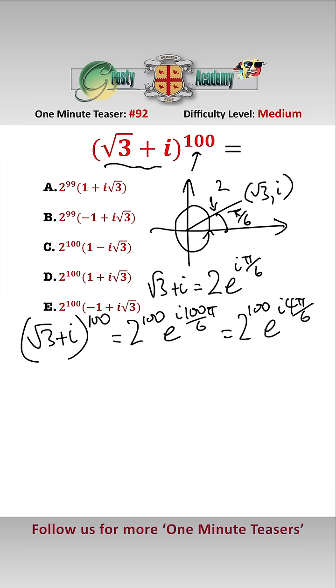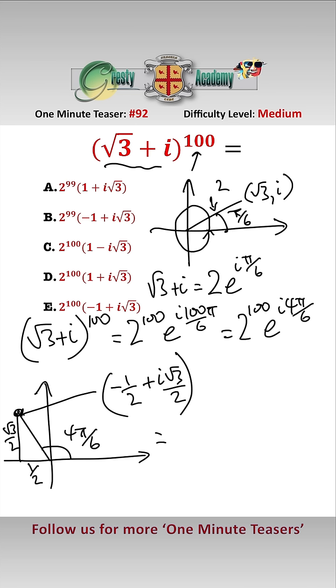Again looking at our Argand diagram, e^(i·4π/6) will have 4π/6 here, so this distance here is √3/2 and this distance here is 1/2, so that point there is -1/2 + i√3/2.